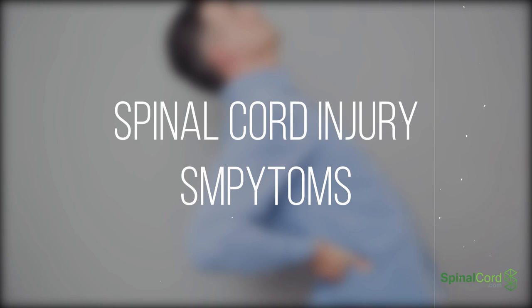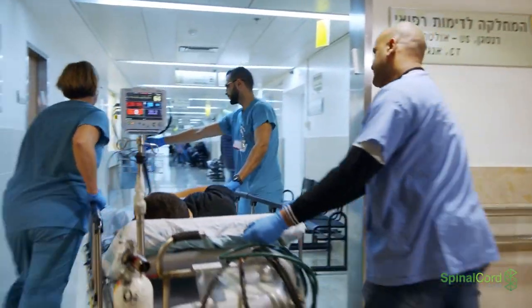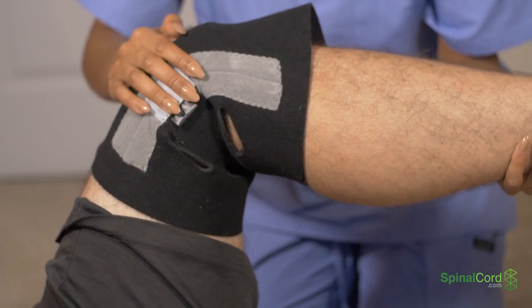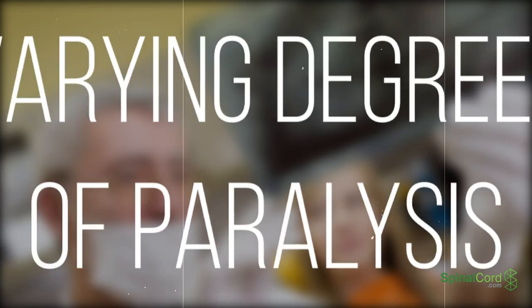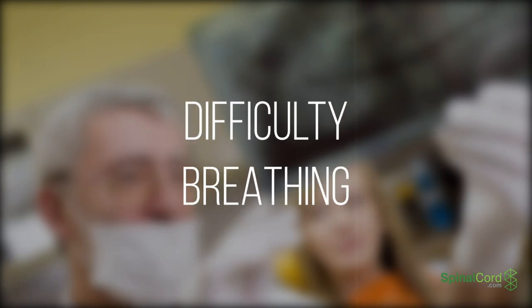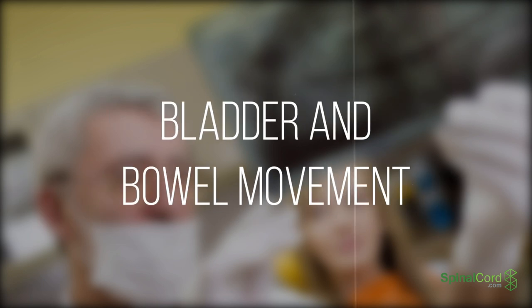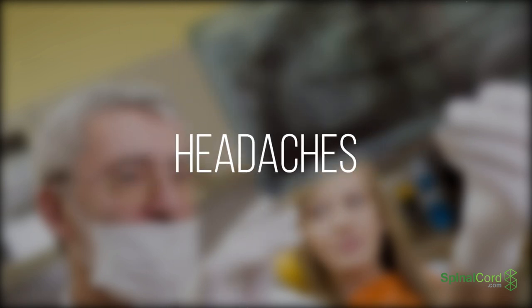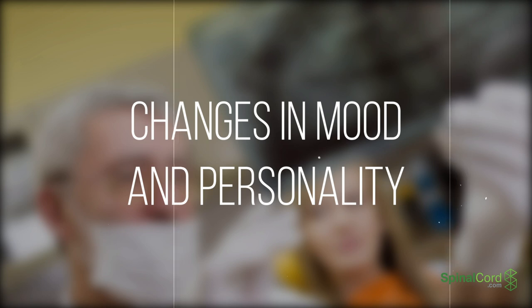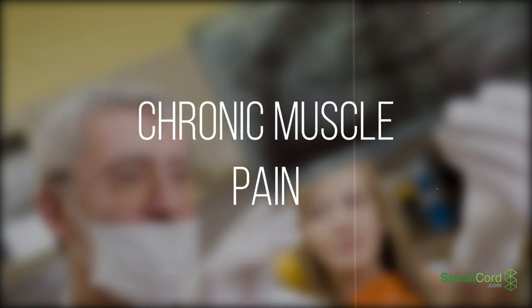Spinal cord injury symptoms. A spinal cord injury is not the sort of thing you have to wonder about having — if you've suffered one, your life is in danger and you'll know you're injured. Some make a miraculous recovery within months; others need years of physical therapy and still make little to no progress. A partial list of common symptoms includes varying degrees of paralysis, difficulty breathing, problems with bladder and bowel function, frequent infections, bed sores, chronic pain, headaches, changes in mood or personality, loss of libido or sexual function, nerve pain, chronic muscle pain, and pneumonia.